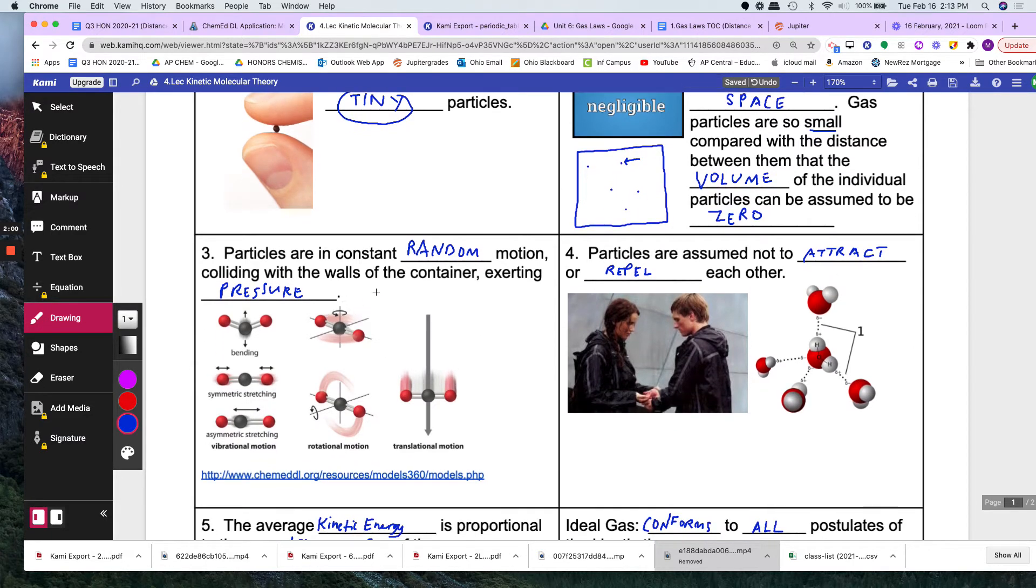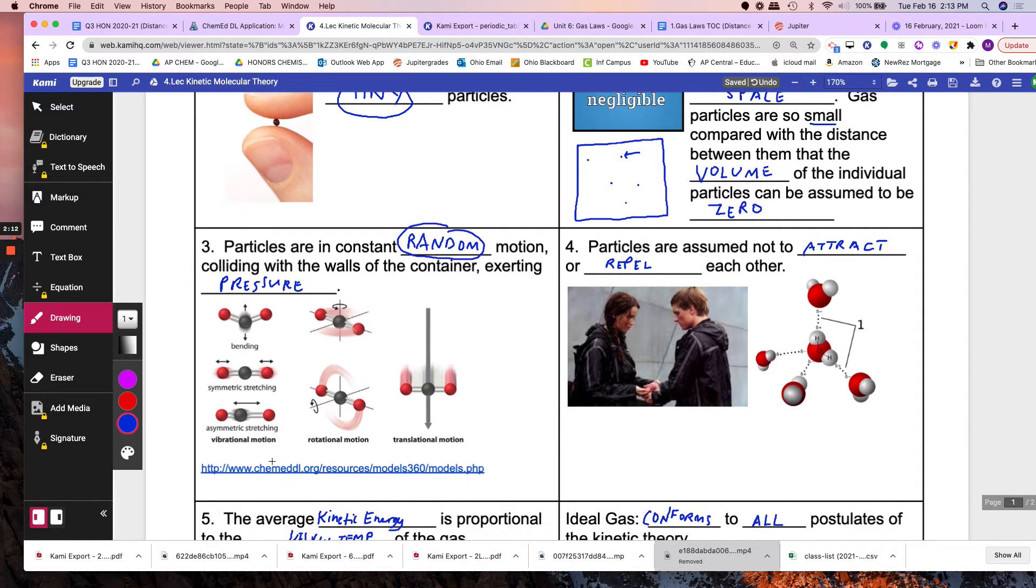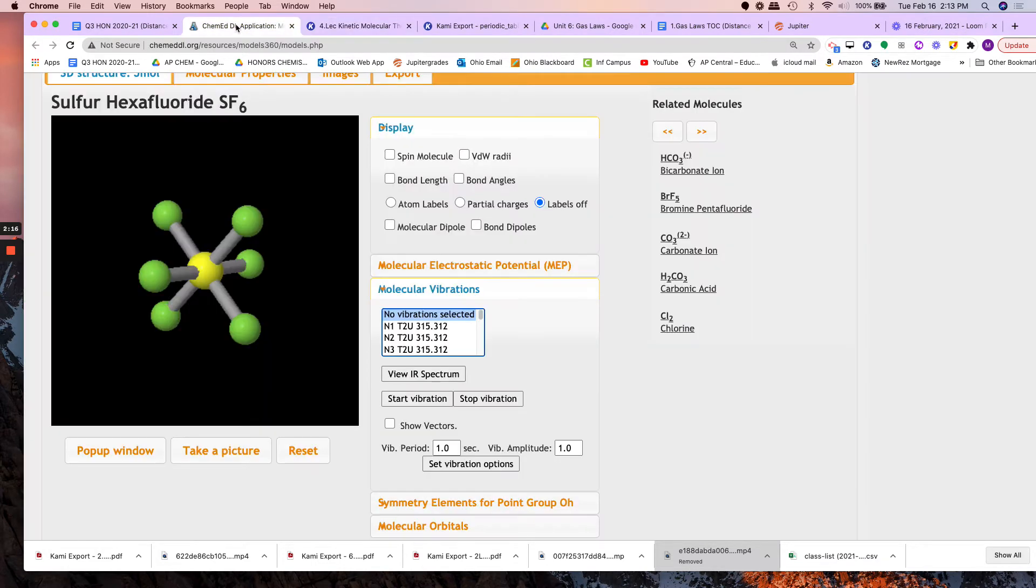Number three, particles are in constant random motion colliding with the walls of the container exerting pressure. So how are these molecules moving? They're moving randomly. And I wanted to show you the different modes of motion. So in this little application it shows you how molecules move. First of all you should know that they have a translational motion where they go up and down side to side in a line like on a track of a train, for example a train track.